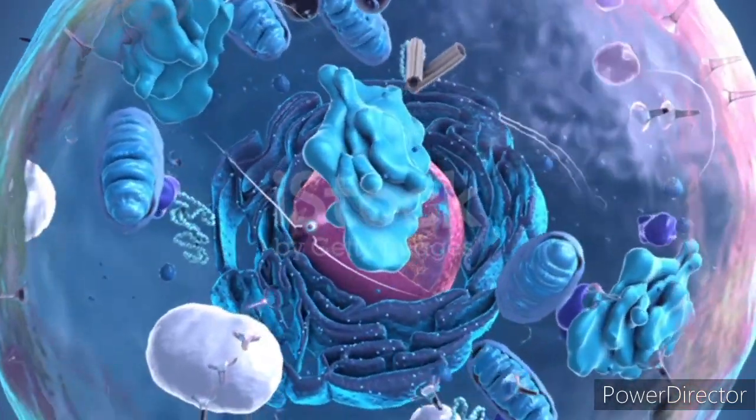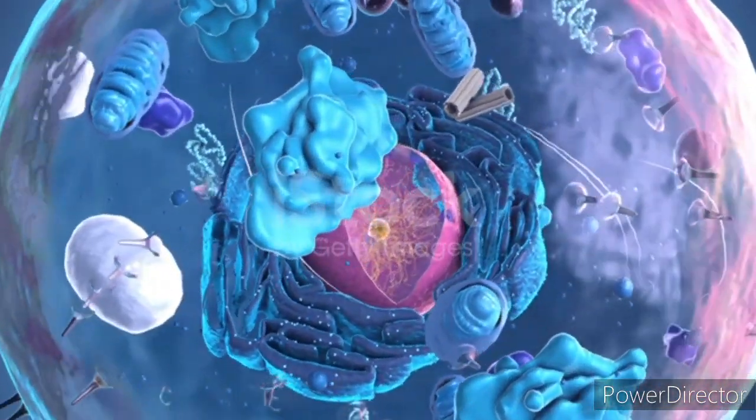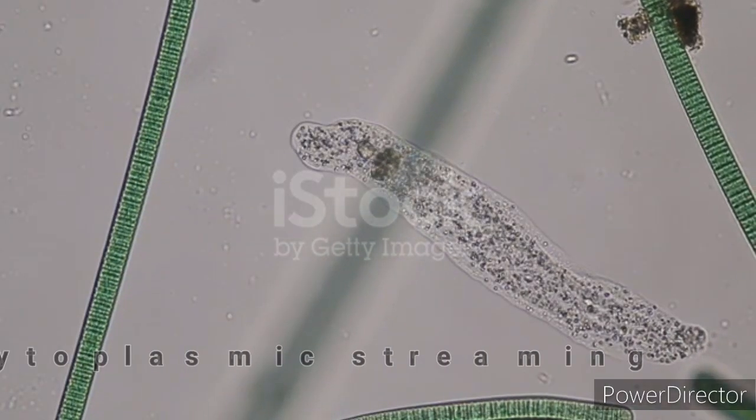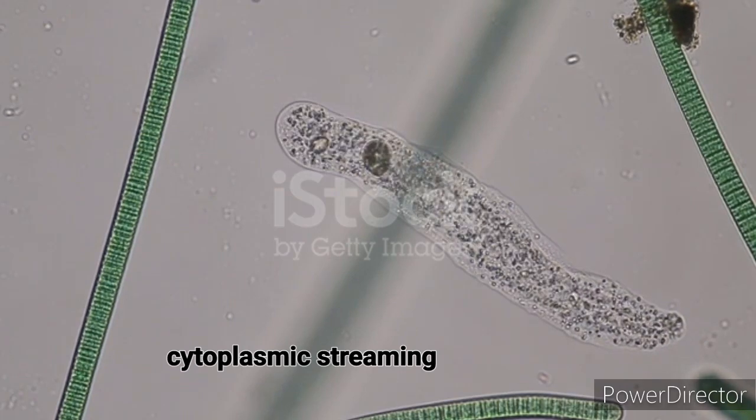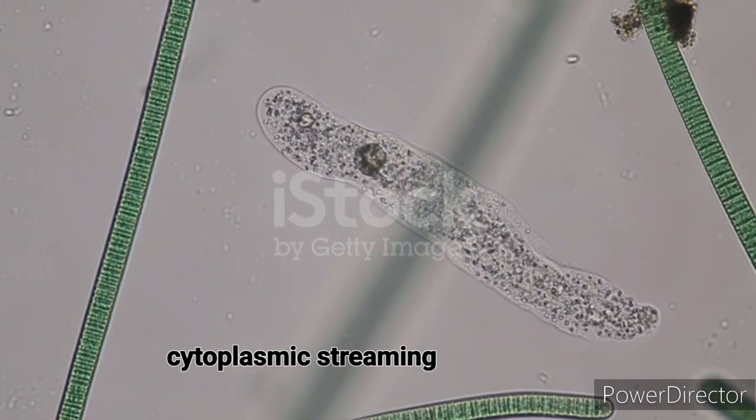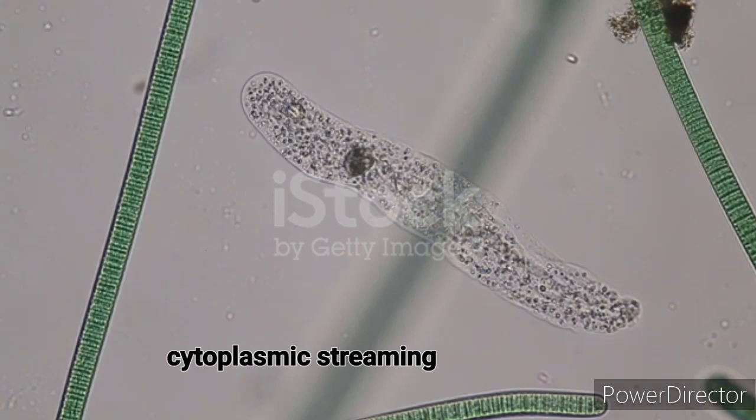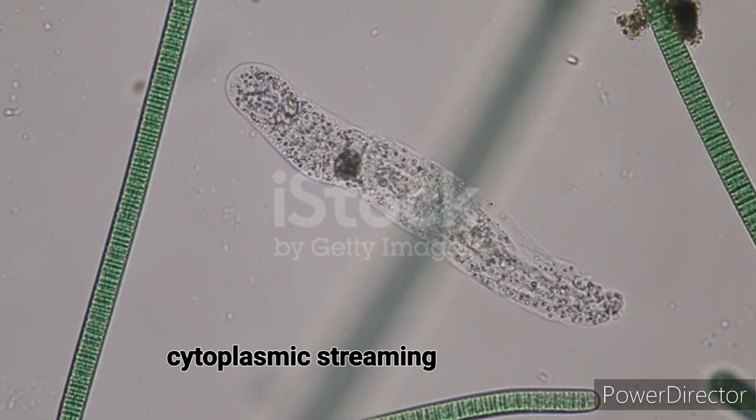Here are some additional aspects related to cytoplasm. Cytoplasmic streaming. Some cells exhibit cytoplasmic streaming, where the cytoplasm moves in a cyclical manner within the cell. This movement helps in distributing nutrients, organelles,